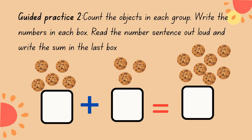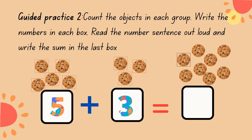Number 2: Count the cookies in each group. Write the numbers in each box. Read the number sentence out loud and write the sum in the last box. Let's count: 1, 2, 3, 4, 5. Let's count the second group: 1, 2, 3. 5 plus 3 equals 1, 2, 3, 4, 5, 6, 7, 8. 5 plus 3 equals 8 cookies.